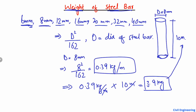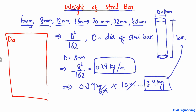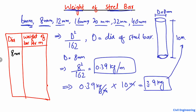Here is a list of different diameters of bar. I'll make a small table with the diameter of the bar on the left and the weight of bar per meter on the right. For 8 millimeter, we found it is 0.39 kg per meter. For 10 millimeter, you can also find out it is 0.62 kg per meter.